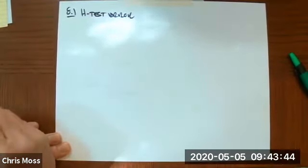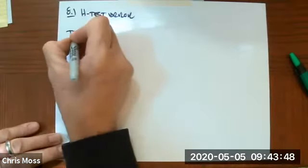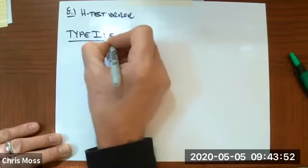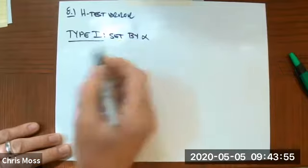Now, the type of error you encounter in a hypothesis test comes in a couple of different flavors. We have the type 1 error. This is set by alpha.